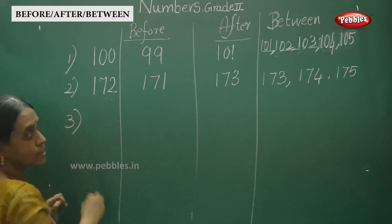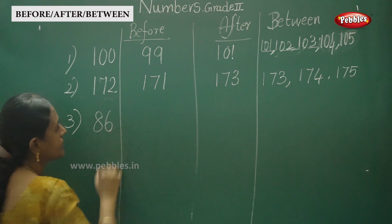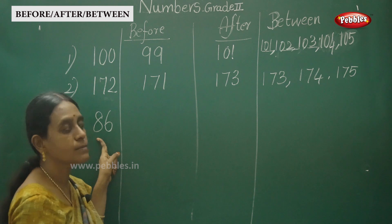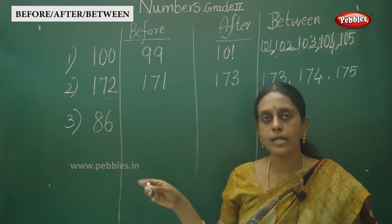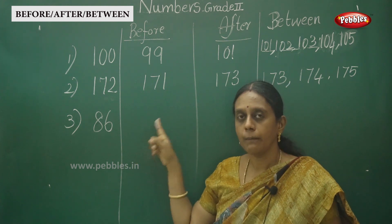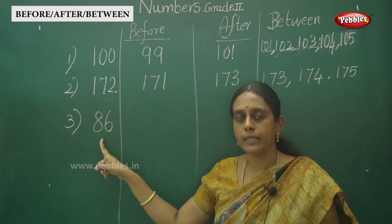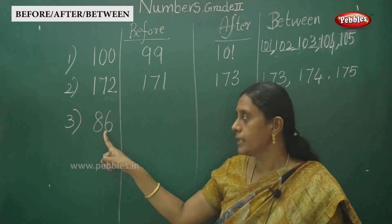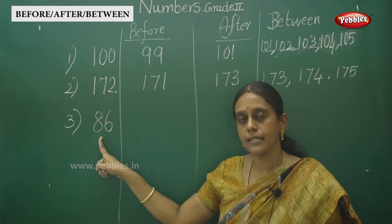One more example for a two-digit number — that is 86. From which number do you start? We start from 80: 80, 81, 82, 83, 84, 85, 86. So the before number of 86 is 85, and the after number is 87.